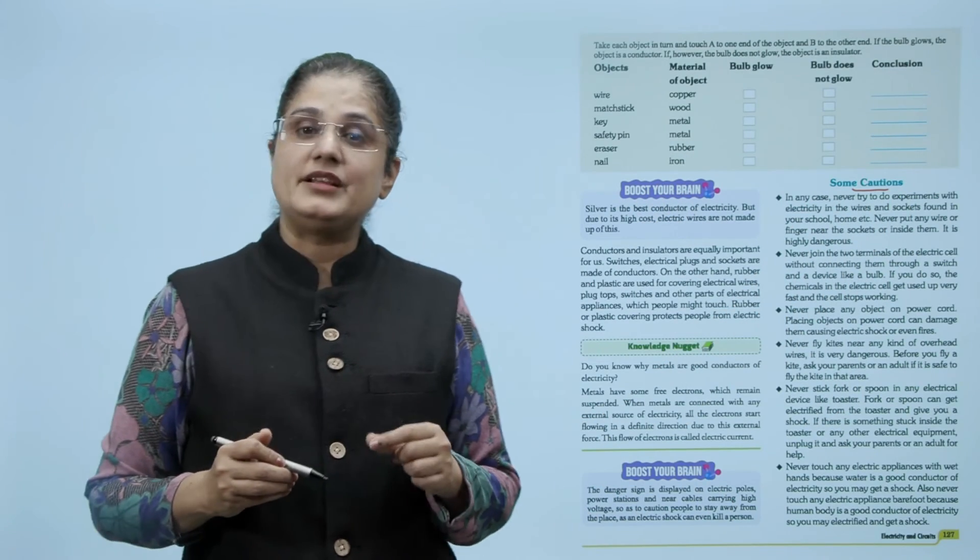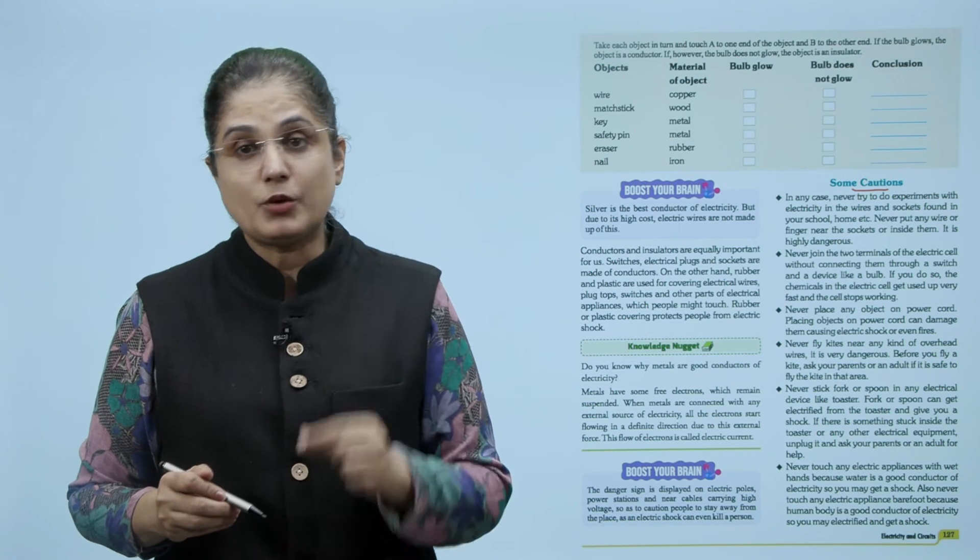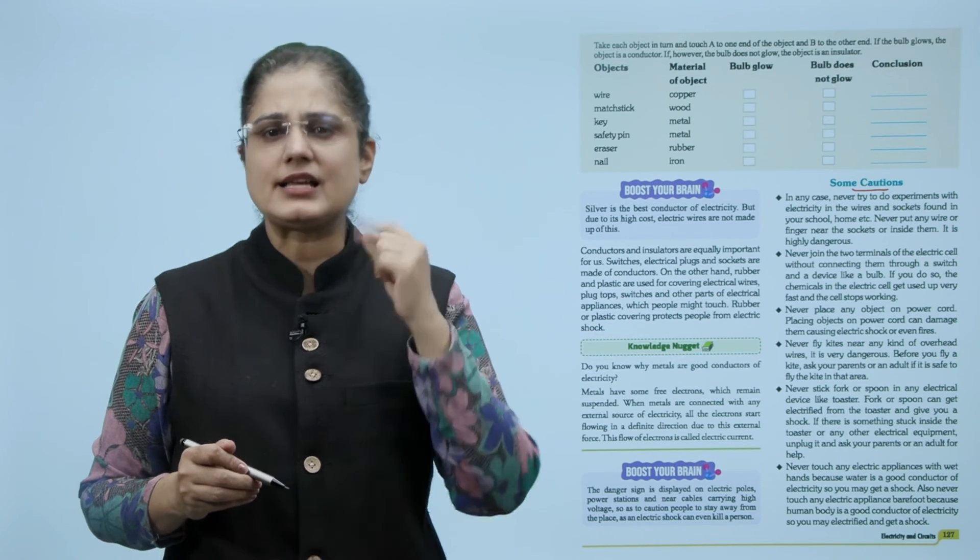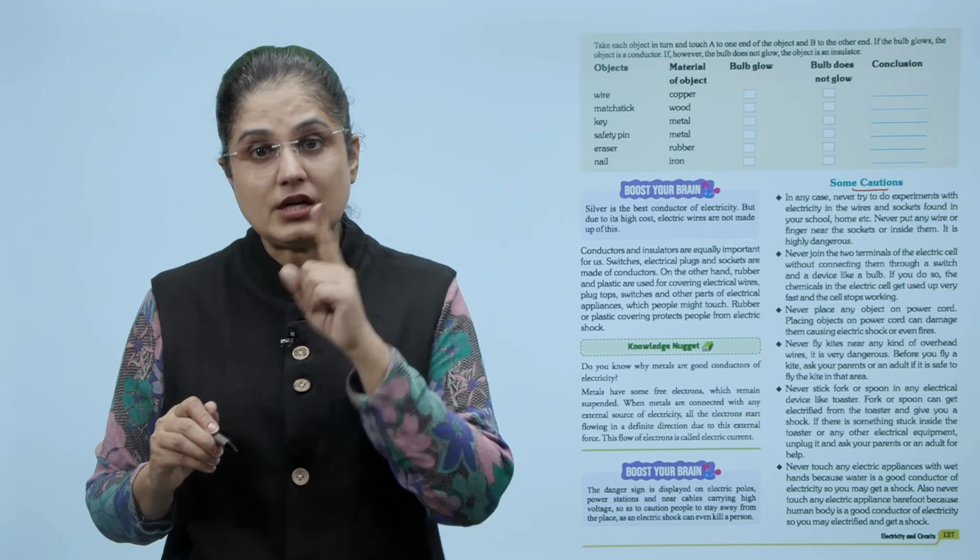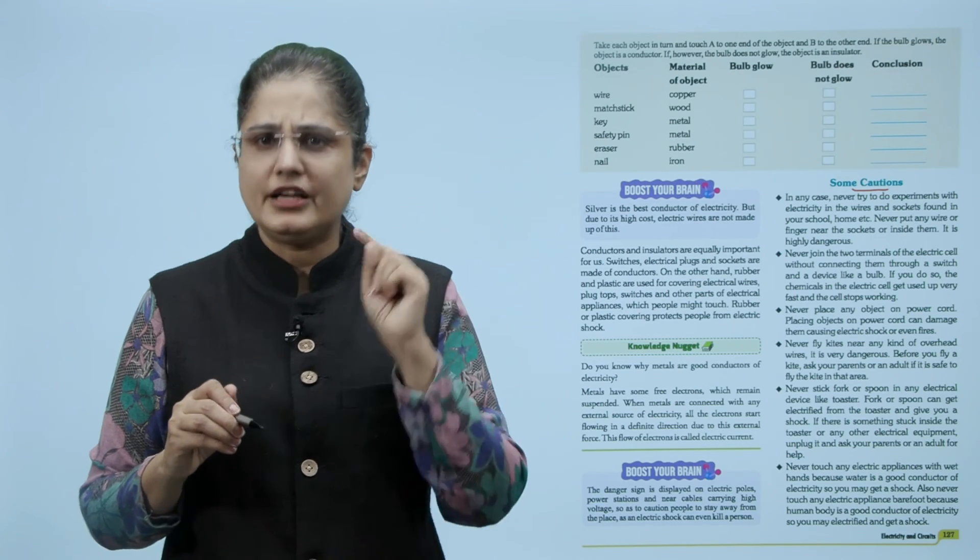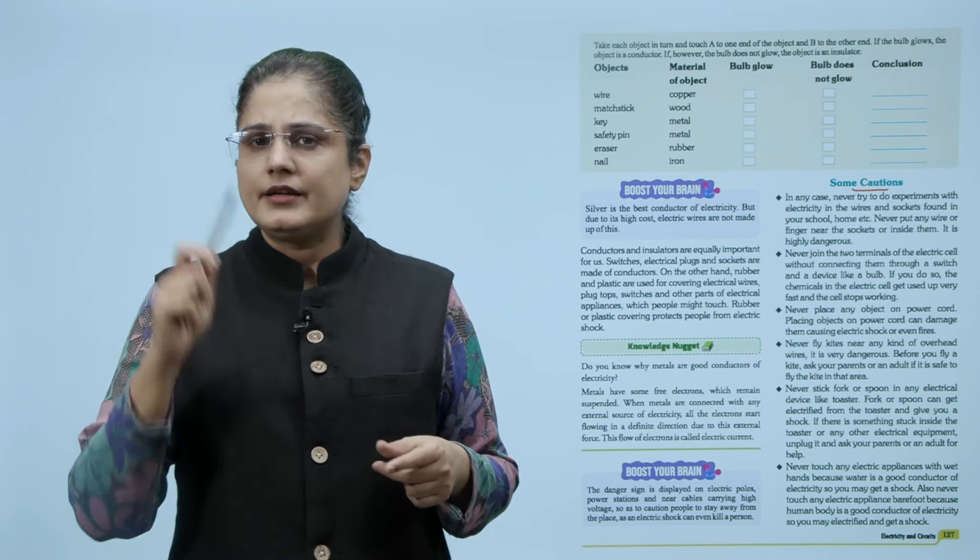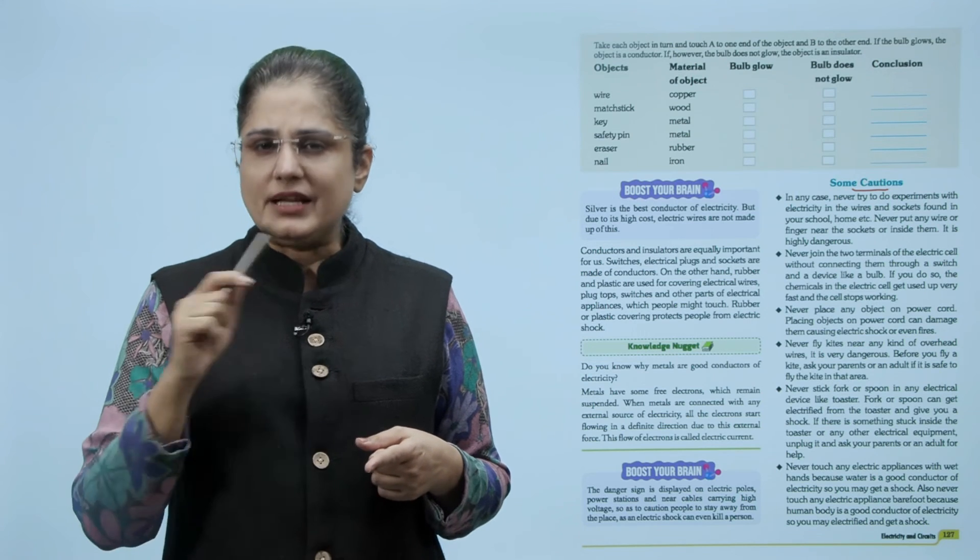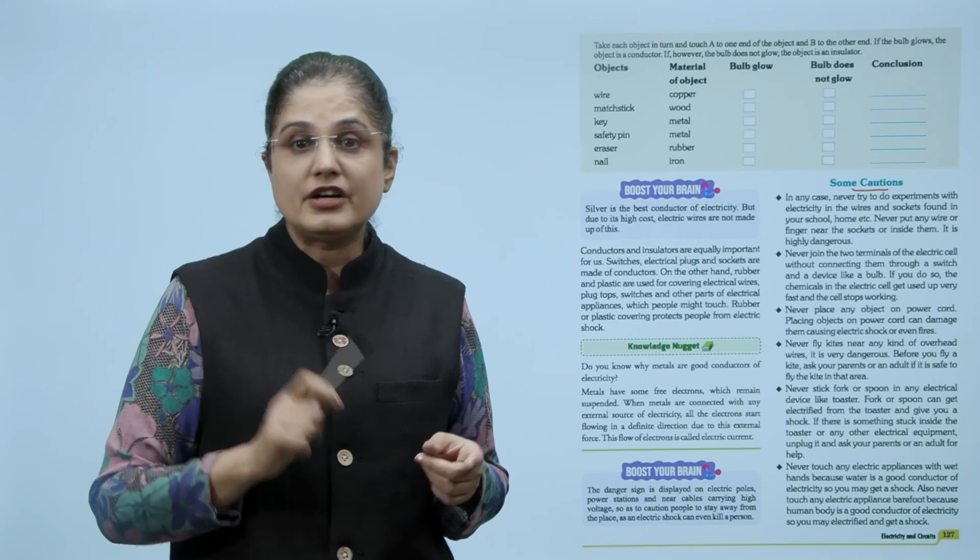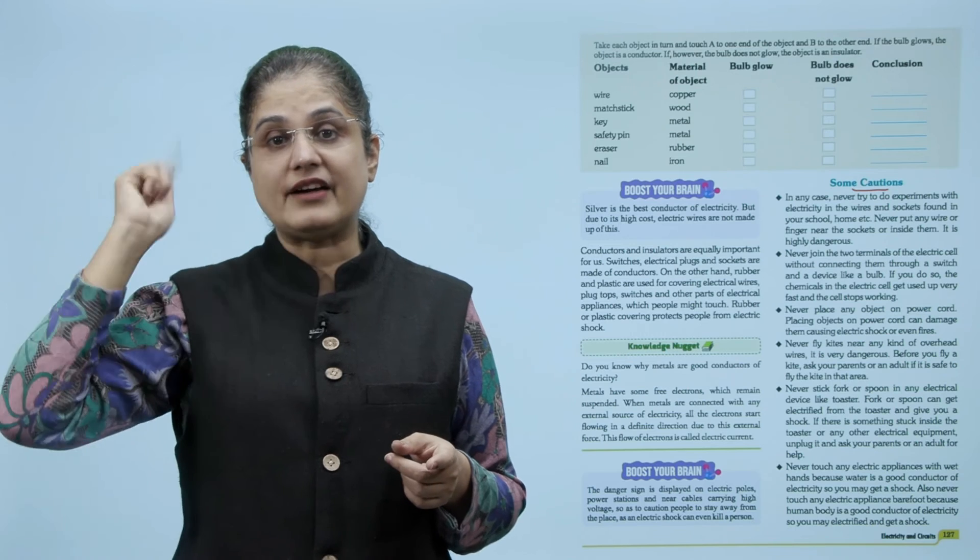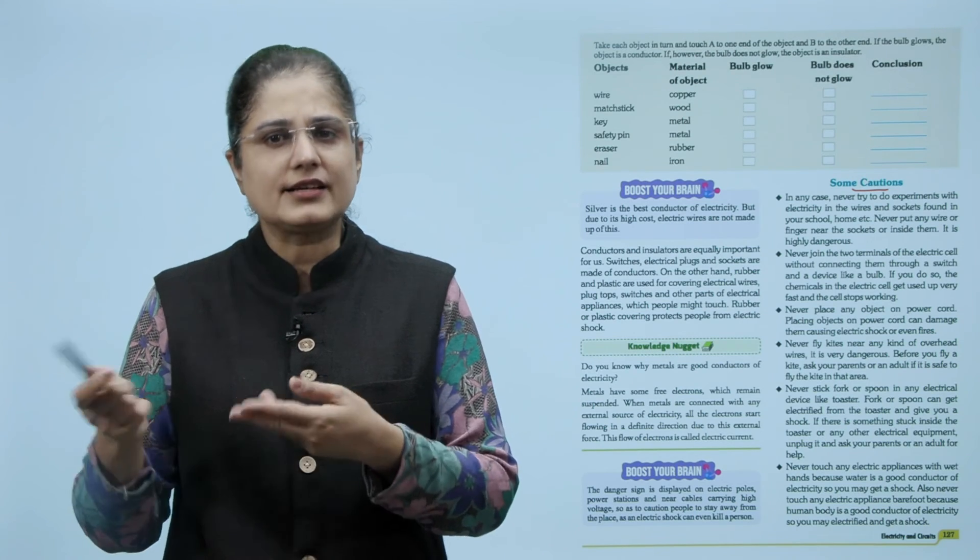Never try to do experiments with electricity in the wires and sockets found in your school, home. Never put any wire or finger near the sockets or inside them. It is highly dangerous. Never join the two terminals of the electric cell without connecting them through a switch and a device like a bulb. If you do so, the chemicals in the electric cell get used up very fast and the cell stops working. Never place any object on power cord. Placing objects on power cord can damage them causing electric shocks or even fires. Never fly kites near any kind of overhead wires. It is very dangerous. Before you fly a kite, ask your parents or an adult if it is safe to fly the kite in that area.